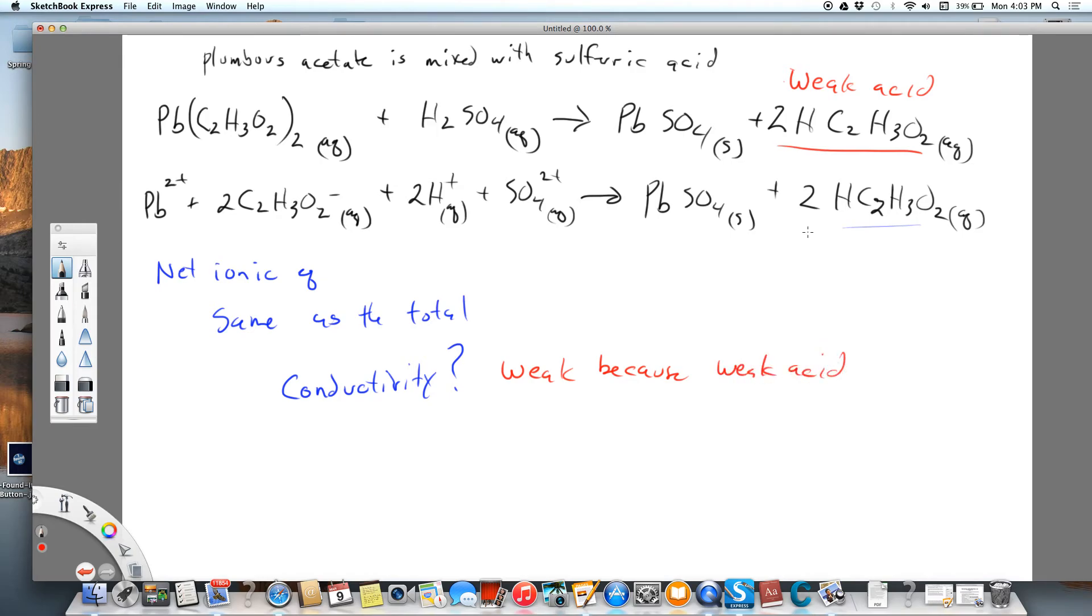And even though we don't write the weak acid as ions, we write it as molecules, we know that there are going to be a few hydrogen ions and a few acetate ions, and that is why it is weak. It is weak, but it is written as molecules, because it is mostly molecules, it mostly stays together. That is why it is written that way in our equations.